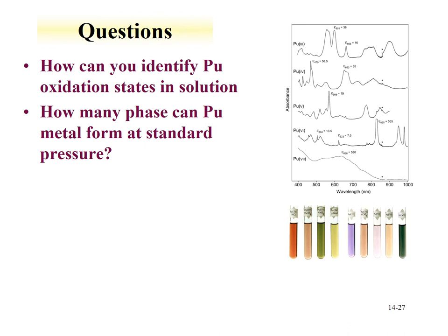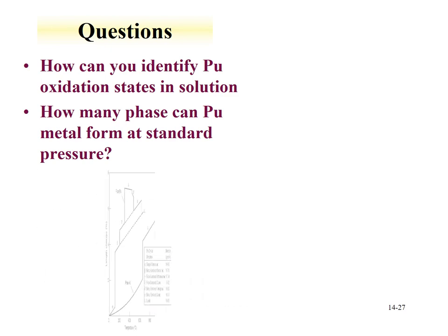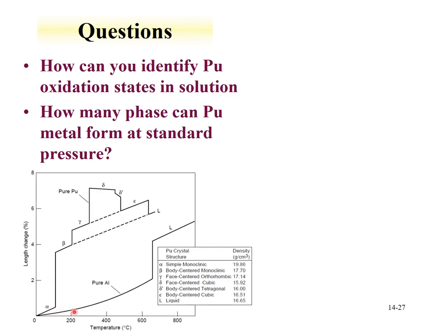How many phases can plutonium metal form at standard pressure? Unlike simple metals such as aluminum, plutonium at standard pressure has six phases, with abrupt changes in length and density at the transition points. The most dense phase is simple monoclinic, while face-centered cubic is the least dense solid phase. Interestingly, some liquid phases are more dense than some solid phases. A seventh phase of plutonium can be obtained at higher pressure.